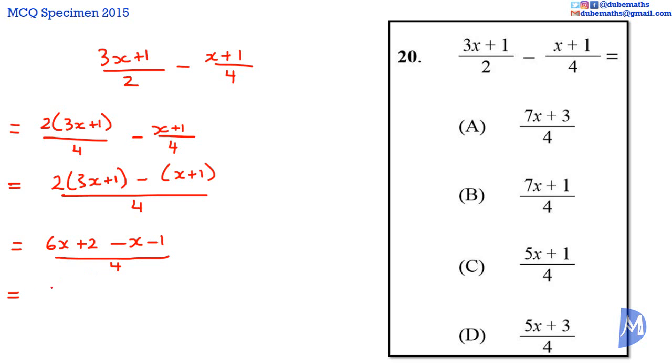6x subtract x is equal to 5x, and 2 added to negative 1 is equal to positive 1. We get 5x plus 1 over 4. The answer is C.